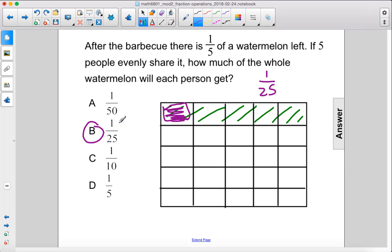This one person will get one twenty-fifth of the entire watermelon. So the answer is B.